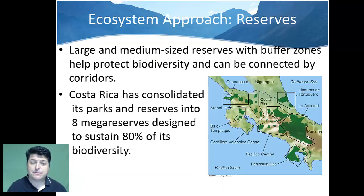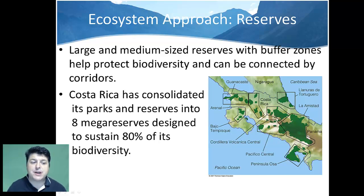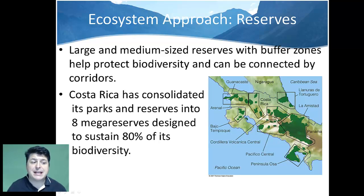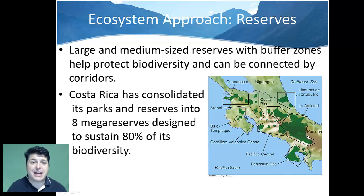Large and medium-sized reserves with buffer zones help protect biodiversity and can be connected by corridors, allowing organisms to move from one reserve to another — or to shift as climate change alters their environment. Costa Rica is a model country for reserves, having consolidated into eight mega-reserves designed to sustain 80% of its biodiversity. Costa Rica has discovered that its natural biodiversity is one of its greatest exports, supporting ecotourism that draws visitors and enhances the economy.